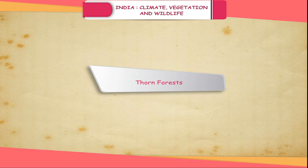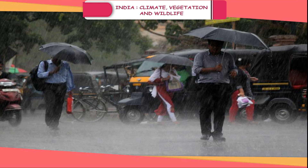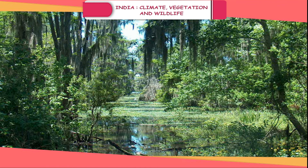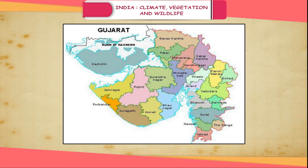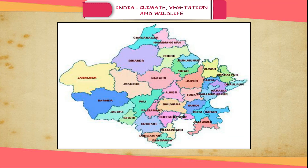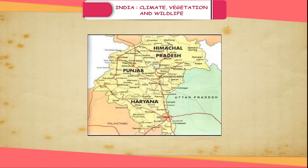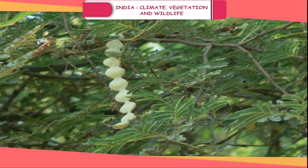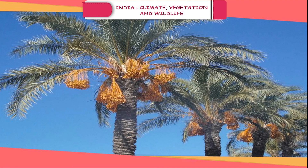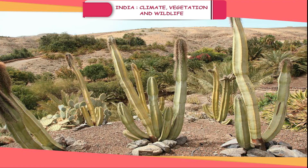Thorn Forests: These are found in areas receiving less than 75 cm rainfall. Thorn forests are also found in swampy areas that are constantly washed by seawater during high tides. These are found in Gujarat, Rajasthan, Punjab and Haryana, and in the interior parts of the peninsular plateau. The common vegetation includes babool, khair, date palms, cactus, etc. Trees are short and stunted, which have thick bark and short leaves.